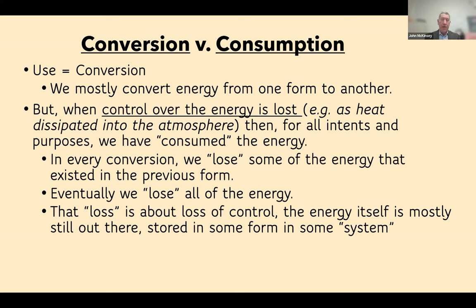When we talk about using energy, we're not really consuming it — we're converting it from one form to another. Every conversion loses some energy, mostly as heat into the atmosphere. This drives the idea that we want to minimize conversions, because every time we convert, whatever we had in that clump of coal or solar panel output, we lose some of what was available. A great example is dynamic braking in electric cars and hybrids, where we take some of the car's kinetic energy and put it back into a battery.